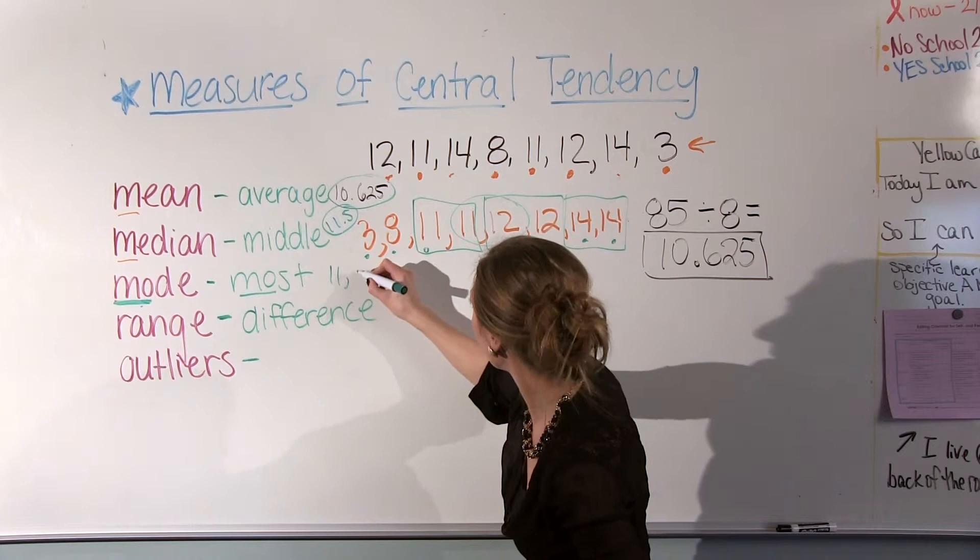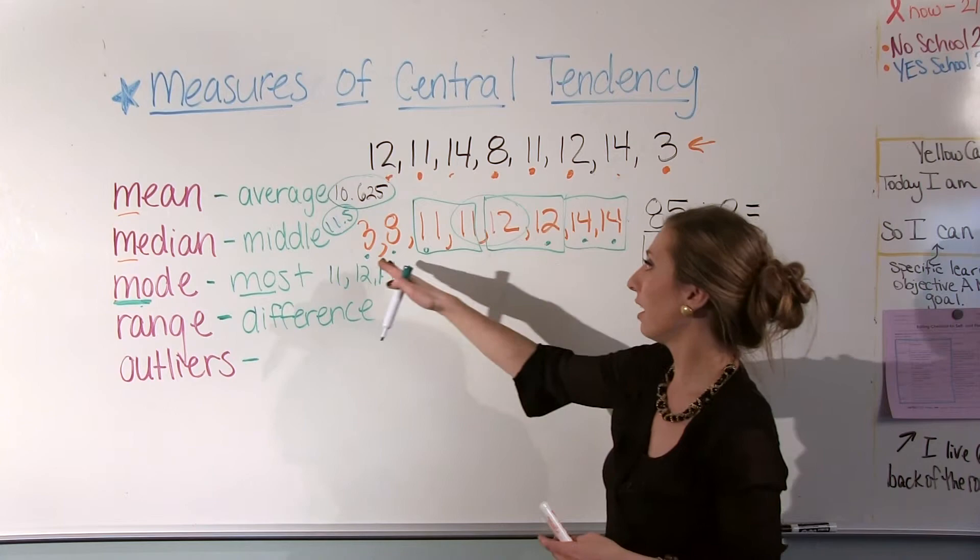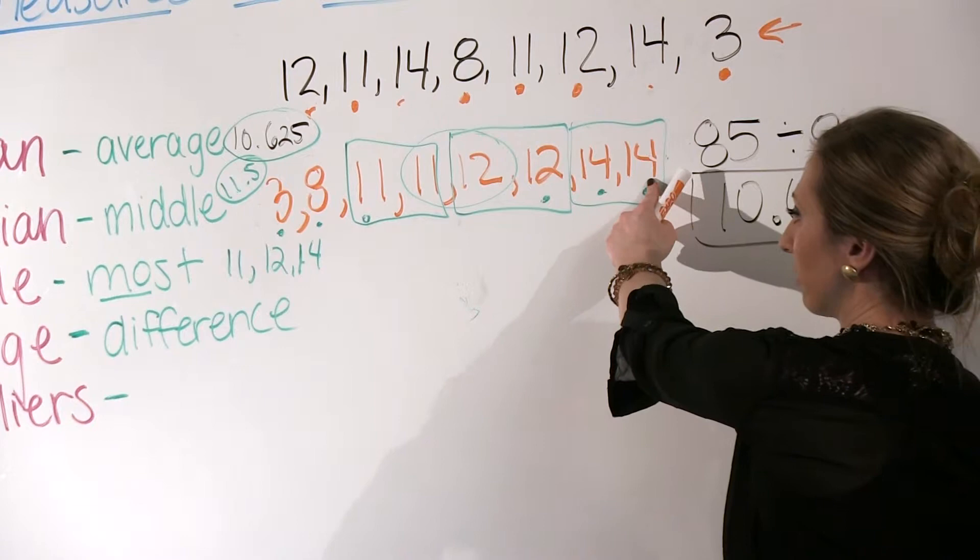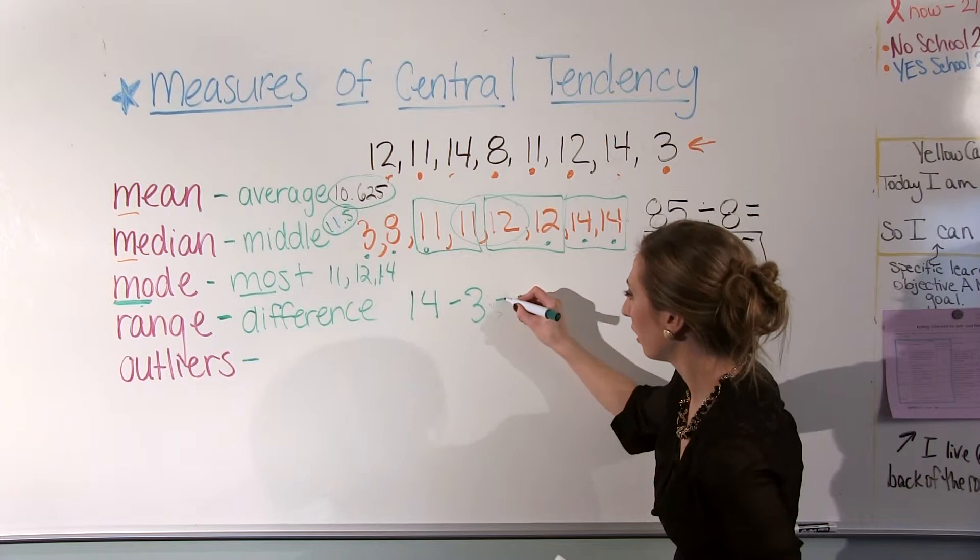Range is going to be the difference between the greatest and the least value. So if your list is in order, easy, all you have to do is take your last number and then subtract the first number or the smallest number, and that's your range. So our range is 11.